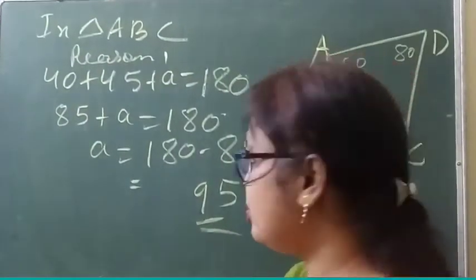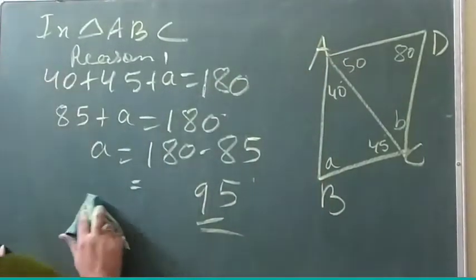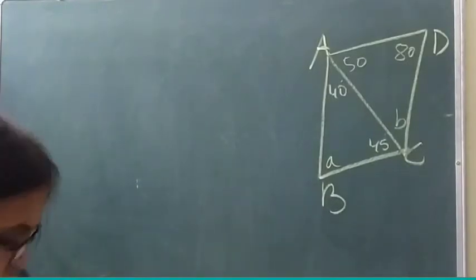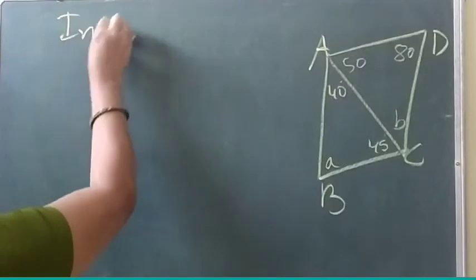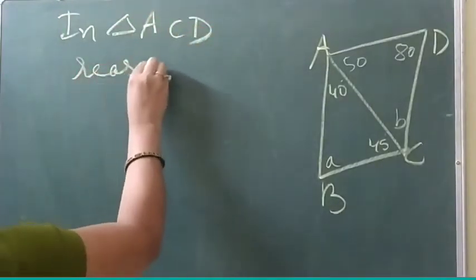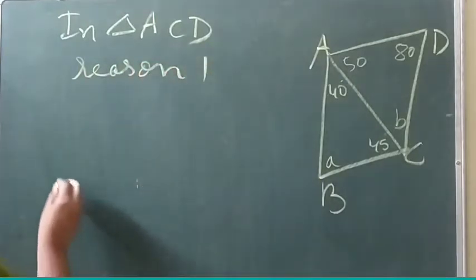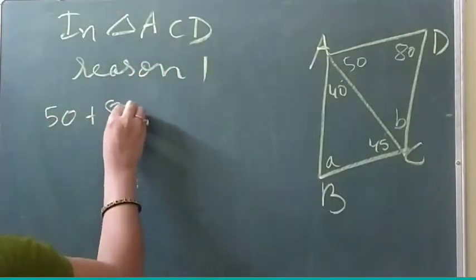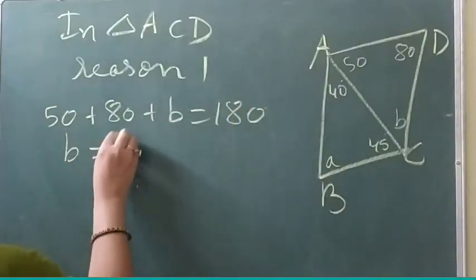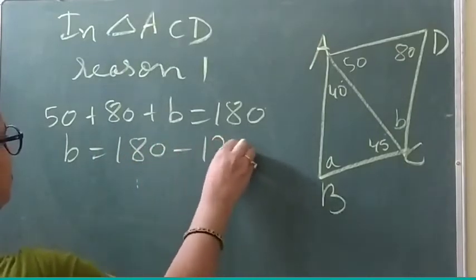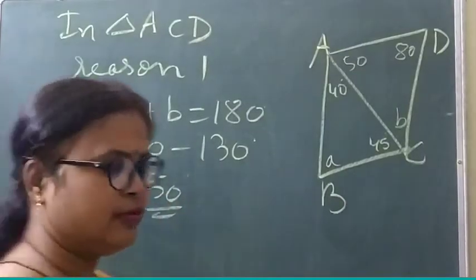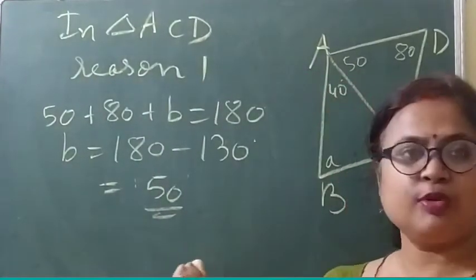Now you have to find out the value of B also. In triangle ACB, Reason 1: 50 plus 80 plus B is equal to 180. So B will be equal to 180 minus 130, which gives 50 degrees. So the answer is 50 degrees.